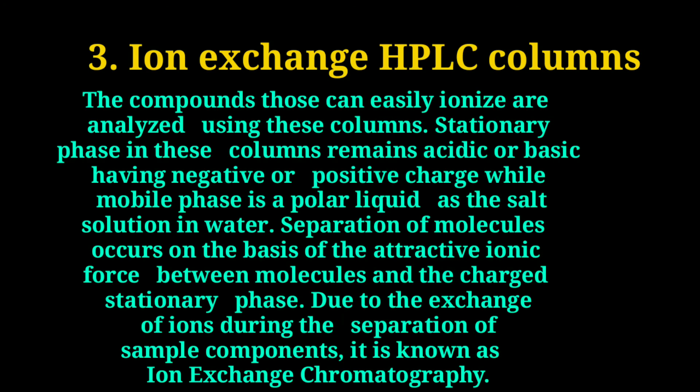Number three: ion exchange HPLC columns. Compounds that can easily ionize are analyzed using these columns. The stationary phase in these columns is acidic or basic, having a negative or positive charge, while the mobile phase is a polar liquid such as a salt solution in water. Separation of molecules occurs on the basis of the attractive ionic force between molecules and the charged stationary phase. Due to the exchange of ions during the separation of sample components, it is known as ion exchange chromatography.